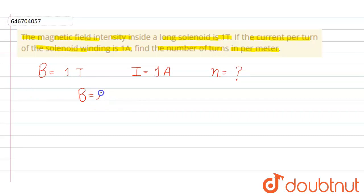The formula is B = μ₀ × n × I. B is given as one tesla. μ₀ is 4π × 10⁻⁷. N we don't know, and I is one.